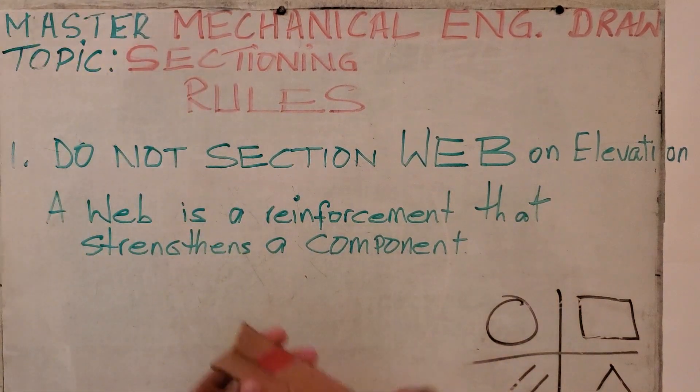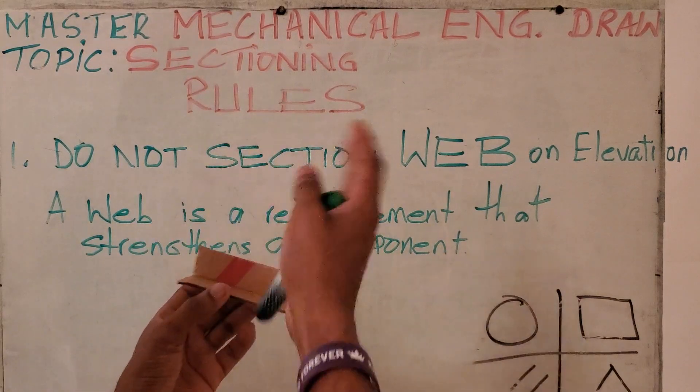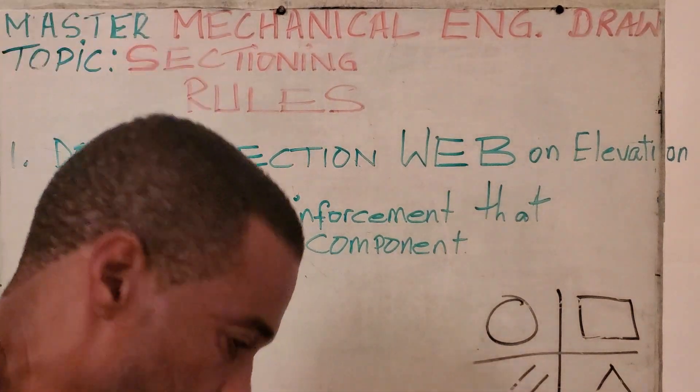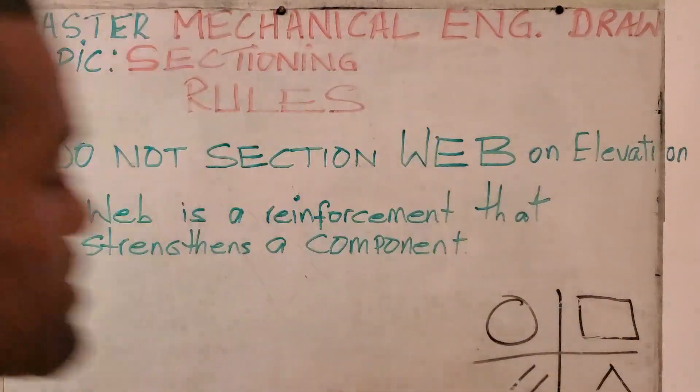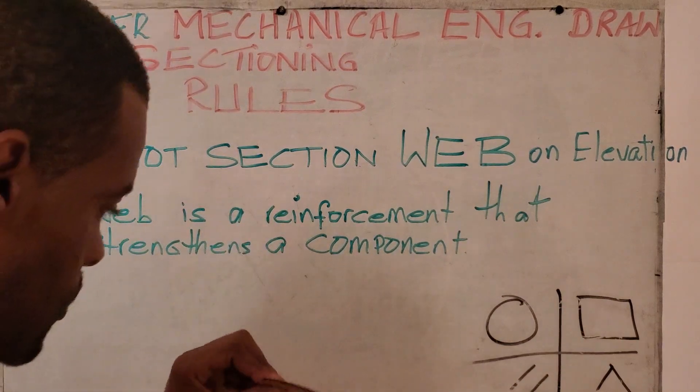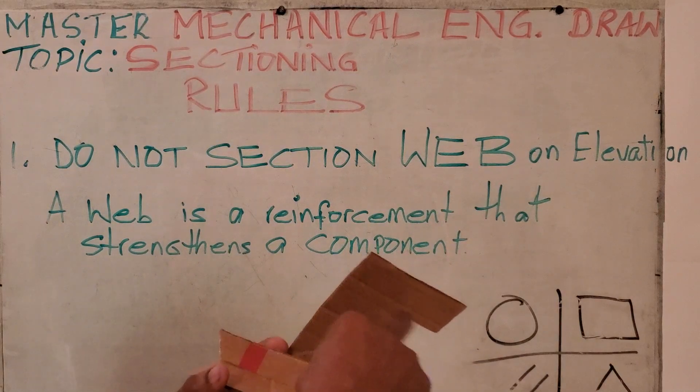Another piece here. This is also a web. What this does, this prevents this from flexing. With all this piece being here, we would have something like this being able to flex like this. So what this piece does, prevents that.